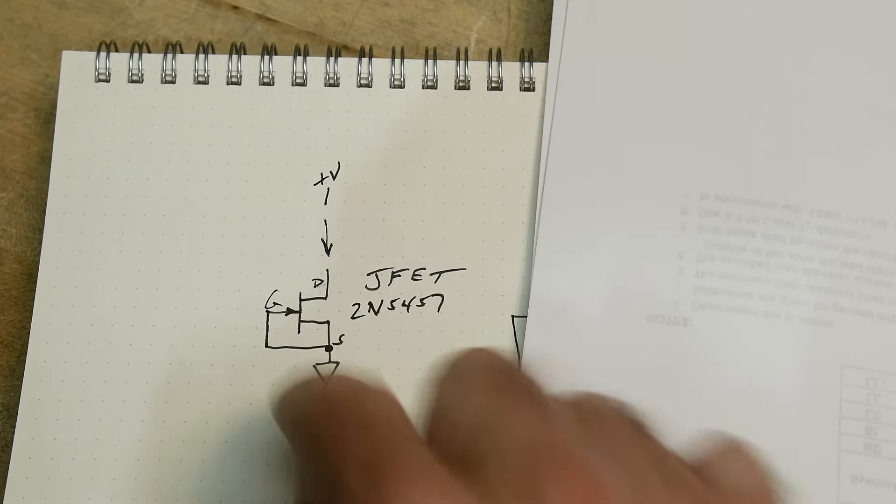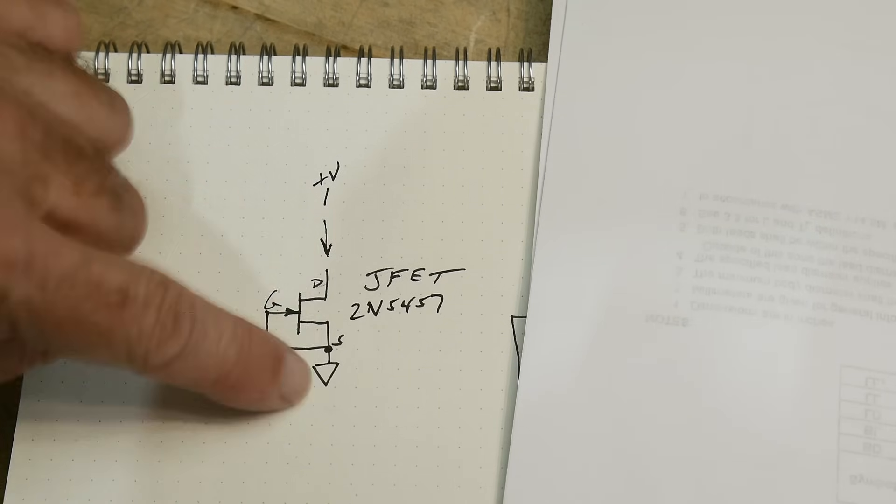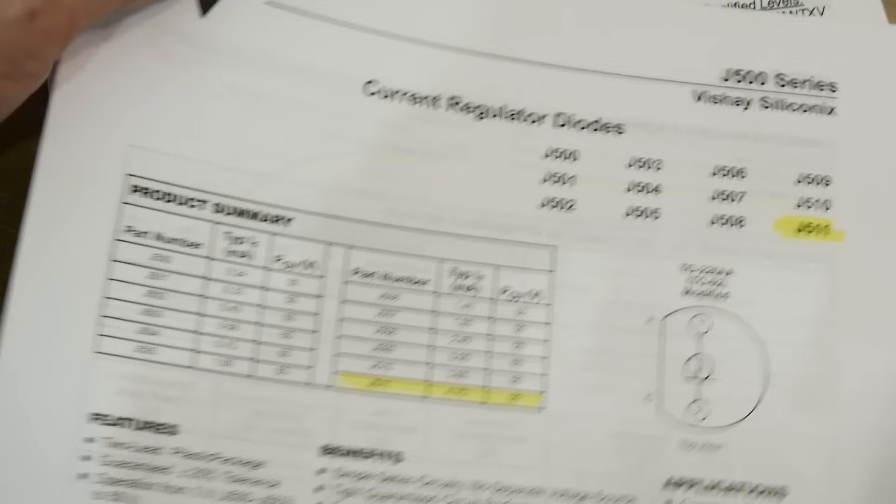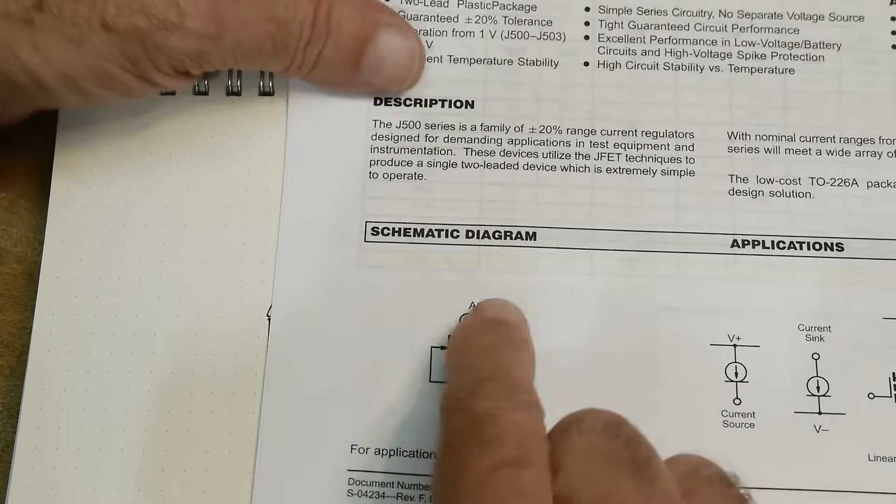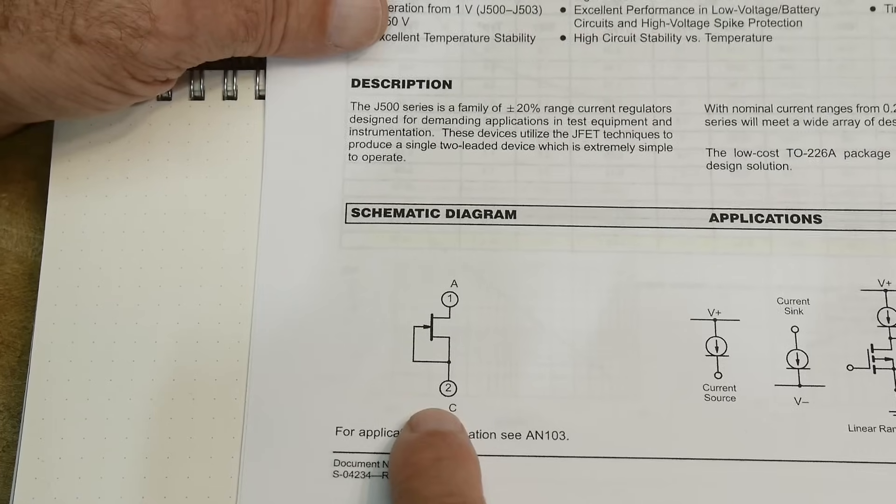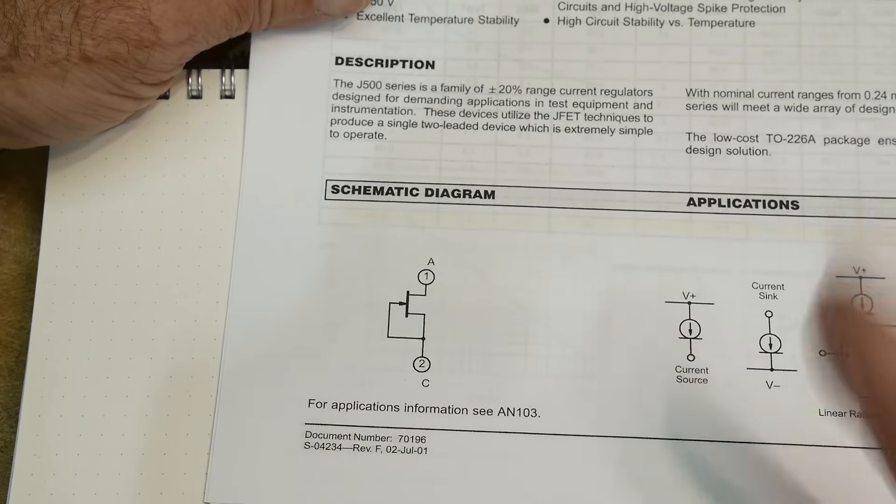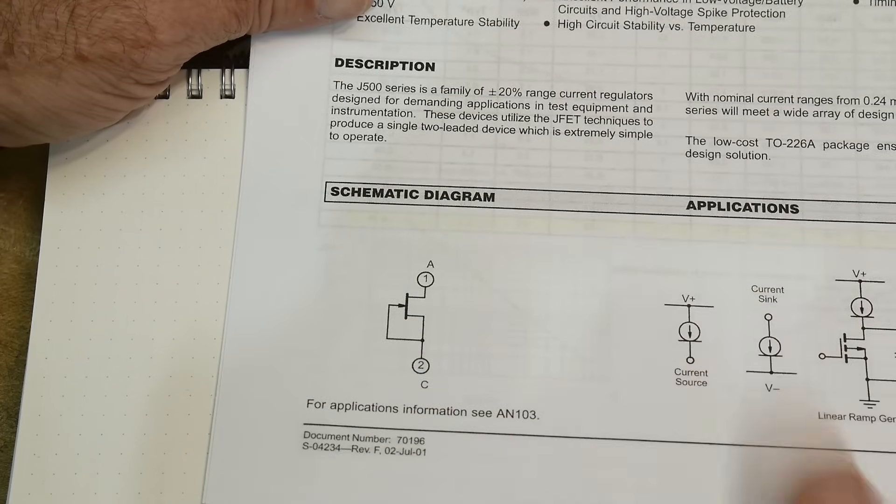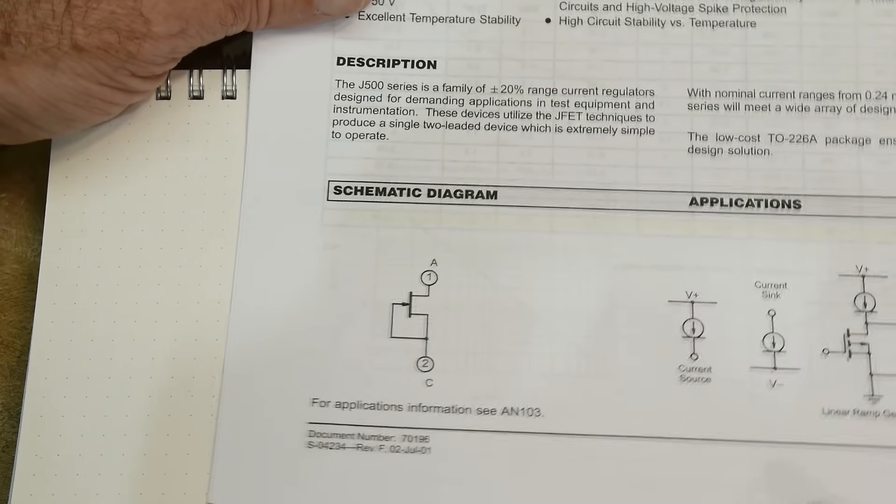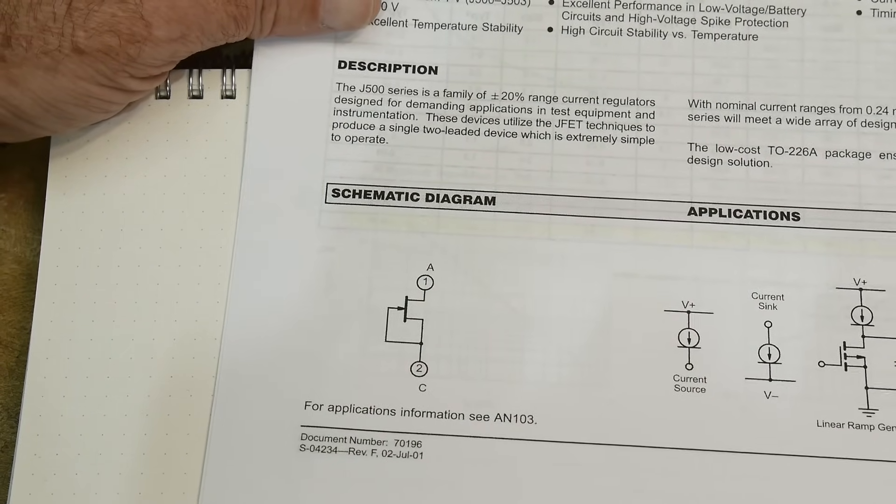We saw that we can use the JFET as a constant current diode. And if you put this all in one package you would just have two pins. Look here, this is the Vishay J511 that I had, and it says here is the schematic diagram of it. They basically just use whatever process they have to build JFETs and they just make it like this and put that inside of the package. They can vary the processes to get different currents. It's their formula for making JFETs is how they do this, and I'm sure that's how they did it with the old diodes as well.